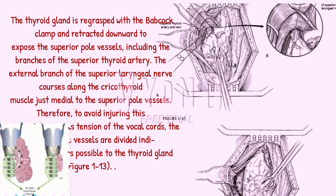The thyroid gland is re-grasped with the Babcock clamp and retracted downward to expose the superior pole vessels, including the branches of the superior thyroid artery. The external branch of the superior laryngeal nerve courses along the cricothyroid muscle just medial to the superior pole vessels. Therefore, to avoid injuring this nerve, which controls tension of the vocal cords, the superior pole vessels are divided as close as possible to the thyroid gland, figure 1-13.